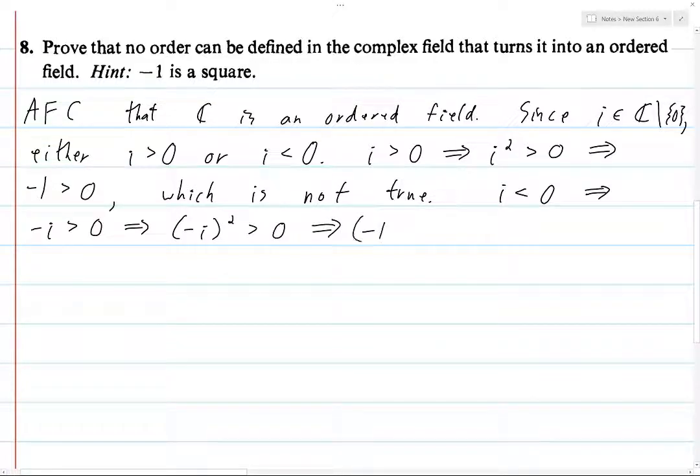But we can factor out this negative 1, so this is negative 1 times i being squared. And so now we can break this up into negative 1 squared times i squared greater than 0. And then, well, negative 1 squared is 1, so this is just i squared is greater than 0. And as we saw before, this means that negative 1 is greater than 0, which is not true.